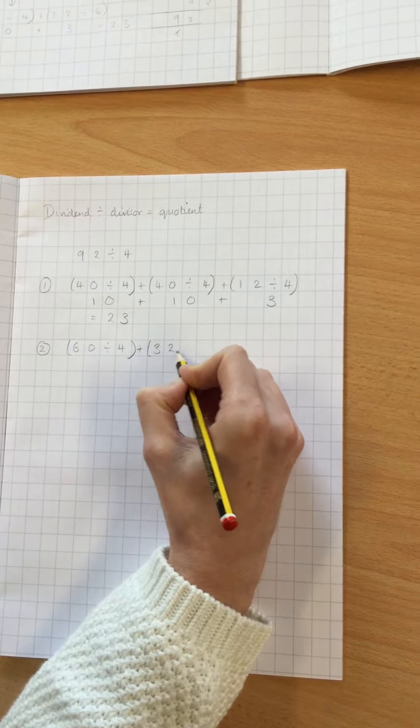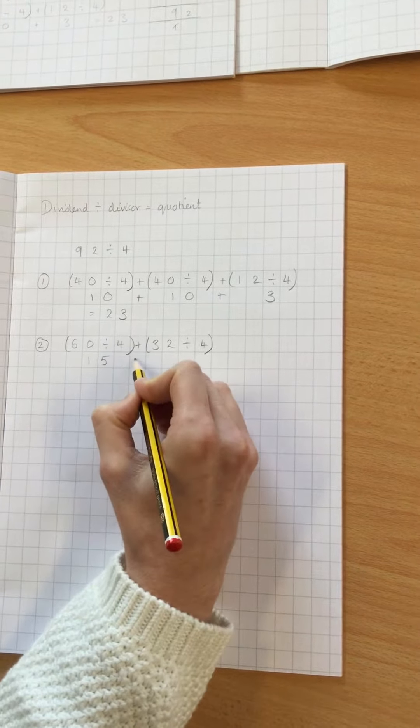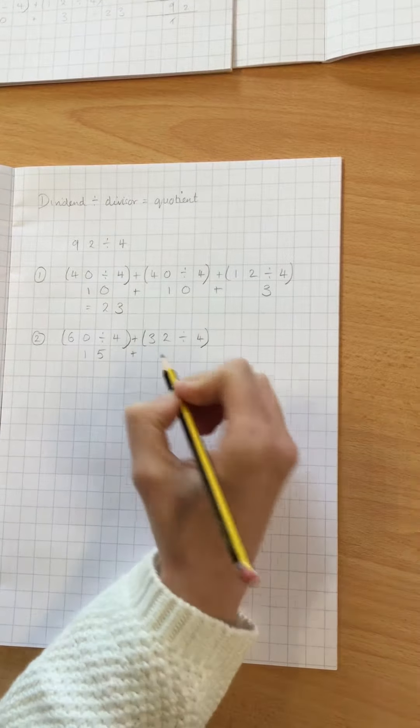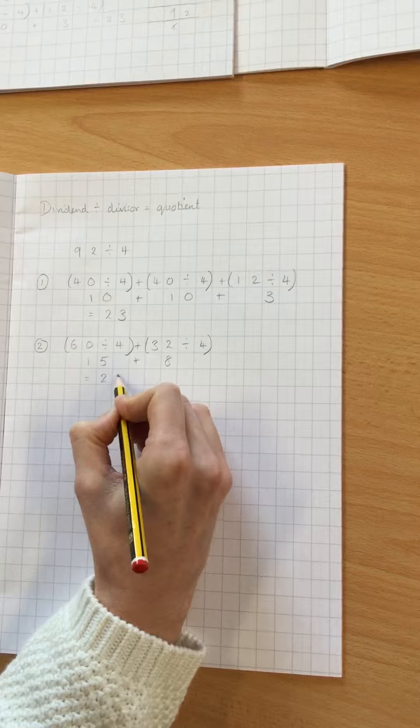So I could do 32 divided by 4. Now, 60 divided by 4 is 15, 32 divided by 4 is 8, and 15 add 8 is, again, 23.